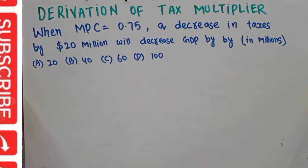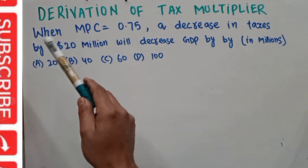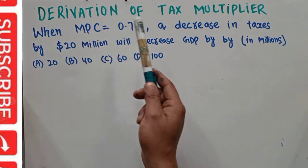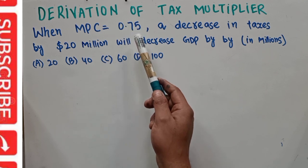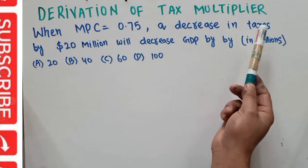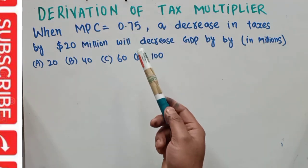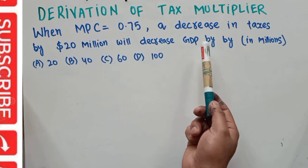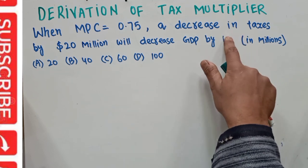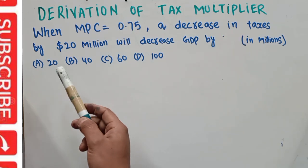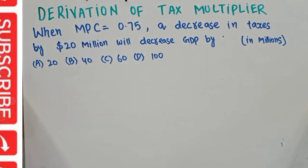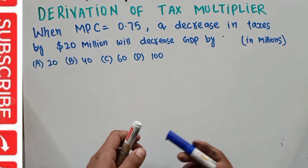In this video we will learn the impact of a decrease in taxes on the GDP, and we will also derive the tax multiplier. The question is: when the marginal propensity to consume in an economy is equal to 0.75, a decrease in taxes by 20 million dollars will increase GDP by how many millions? Options given are 20 million, 40 million, 60 million, or 100 million.